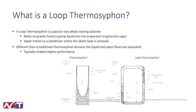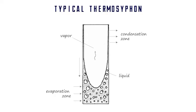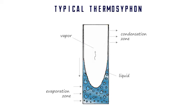A loop thermosiphon is a passive two-phase cooling device. It relies on gravity head to drive the liquid around the loop. You may be familiar with typical thermosiphons as shown here on the left. A typical thermosiphon has a pool of liquid on the bottom. You add heat to it, it evaporates the liquid, and the vapor naturally rises to the top of the pipe. When you remove that heat from the top of the pipe, the vapor condenses into liquid and falls back down by gravity. The liquid and vapor operate in the same space inside of the pipe.